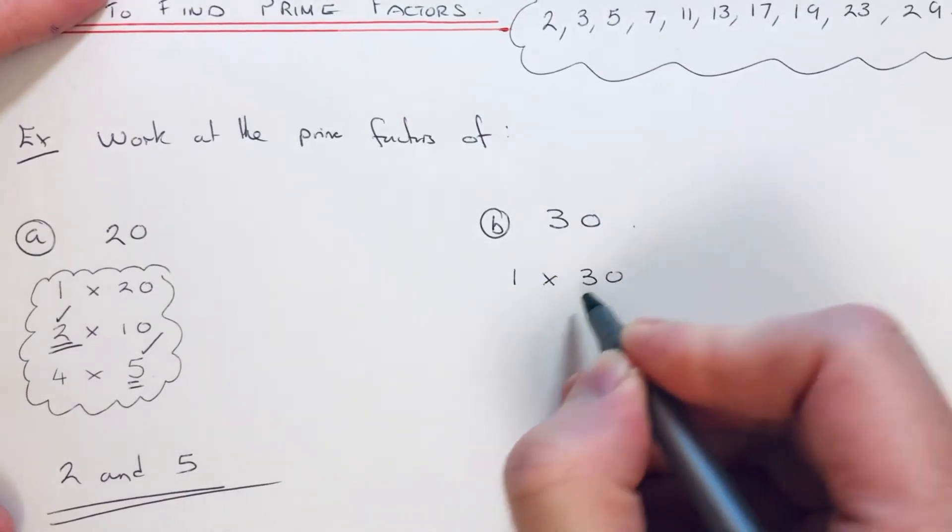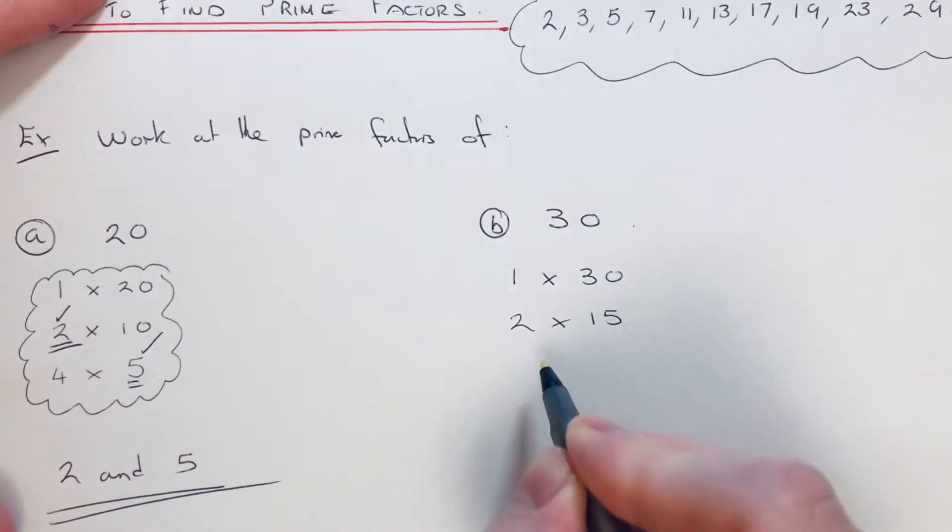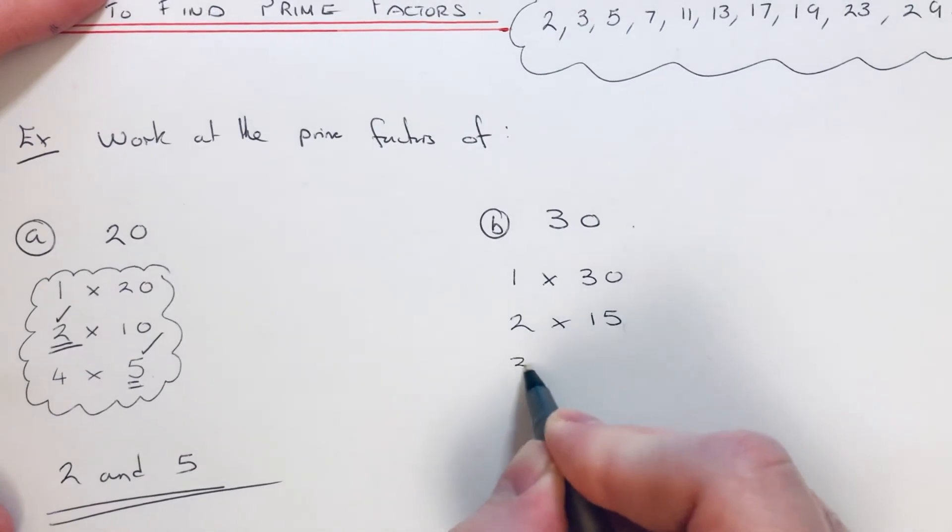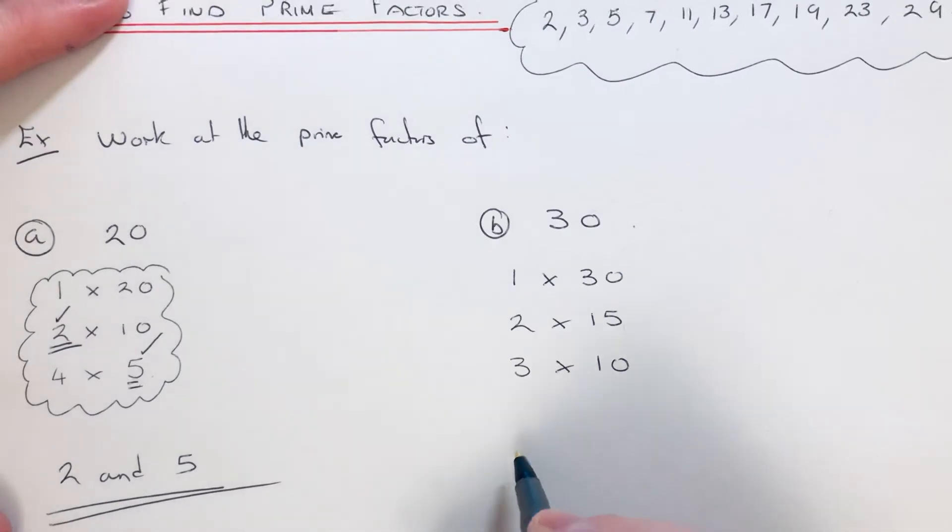2 goes into 30 15 times. 3 goes into 30 10 times. 4 doesn't go into 30. And then we've got 5 goes into 30 6 times.